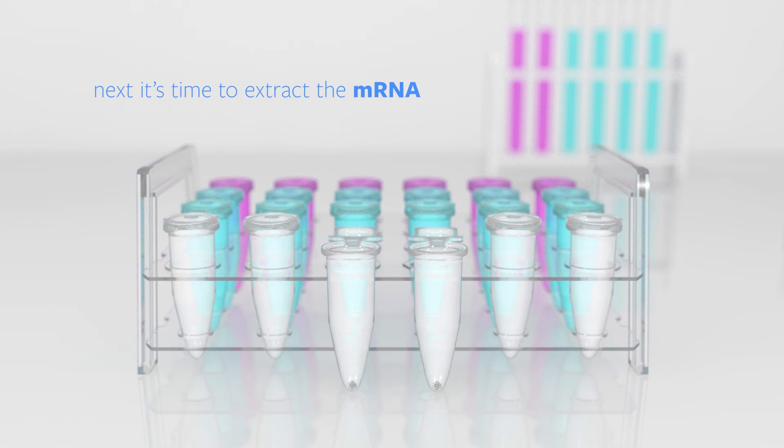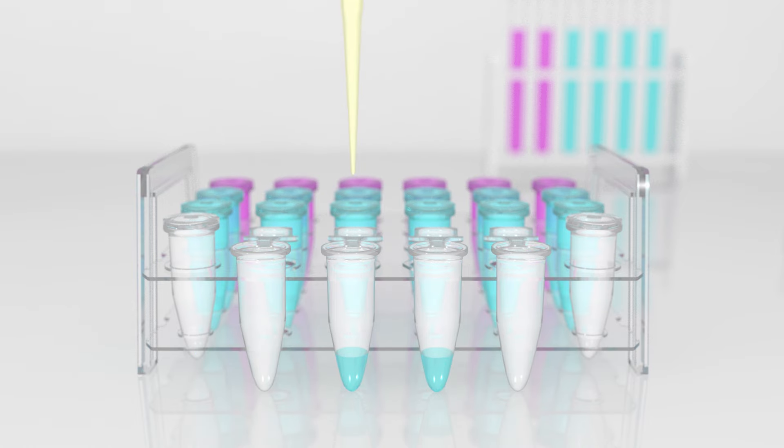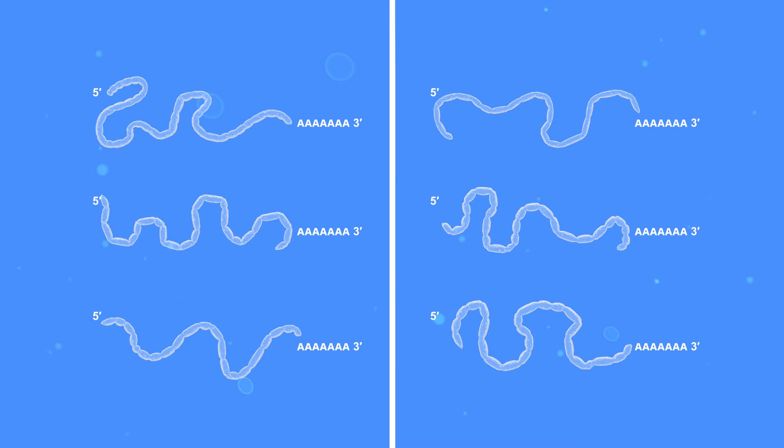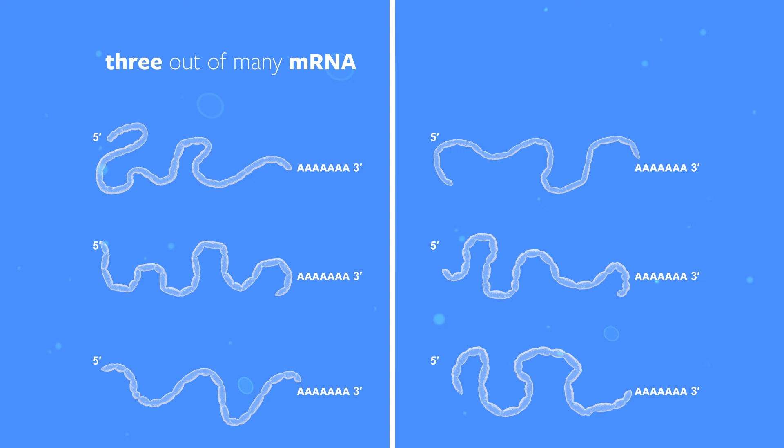Next, it's time to extract the mRNA from the cells. When we add the extraction buffer, the mRNA is released into the solution. We remove the RNA and place it in a fresh tube. Now, let's make the cDNA from the mRNA. Here we see three of the many mRNA molecules from each tube of cells.